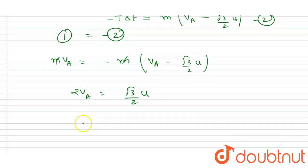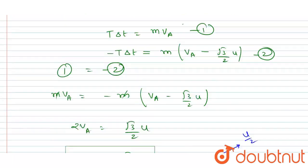root 3 u by 2. And from here you will write va, the velocity of A, will be root 3 u by 4.